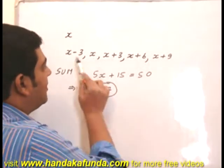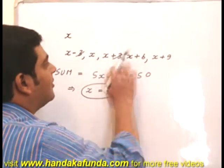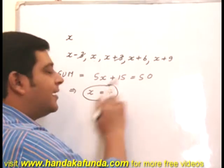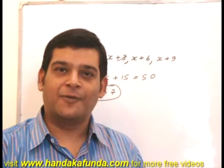If the sum of the ages is 50, total here is 5 times X. Minus 3 plus 3 cancels, 6 and 9 is 15, so 5X plus 15 is 50. X is 7, and that is the value that we were looking for.